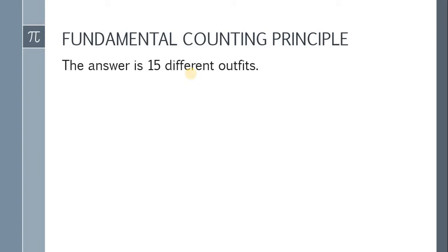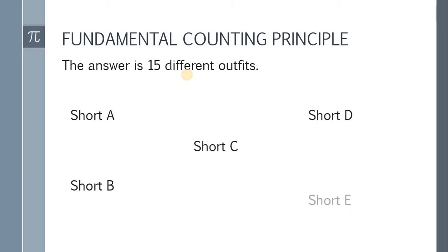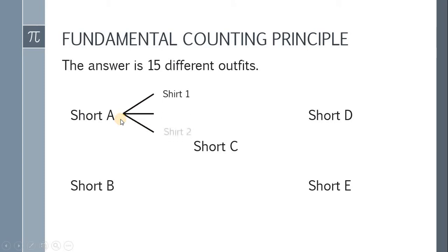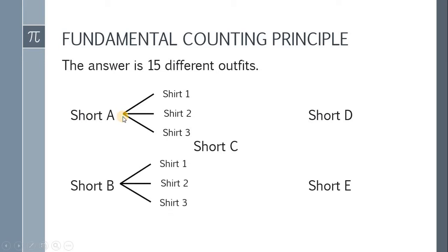So again, we have 5 shorts — short A, short B, short C, short D, and short E. Now short A can be paired with three different shirts: shirt 1, shirt 2, and shirt 3. So you have 3 outfits. Next, short B can also be paired with 3 shirts — shirt 1, shirt 2, shirt 3. So you now have 6 different outfits.